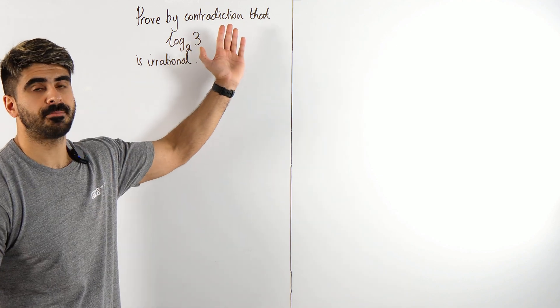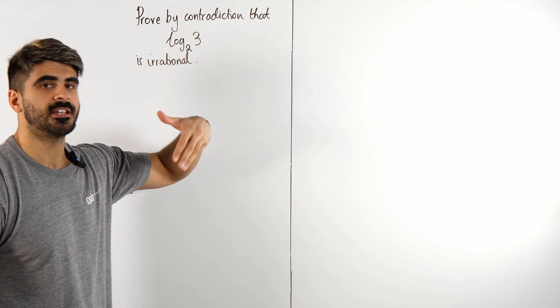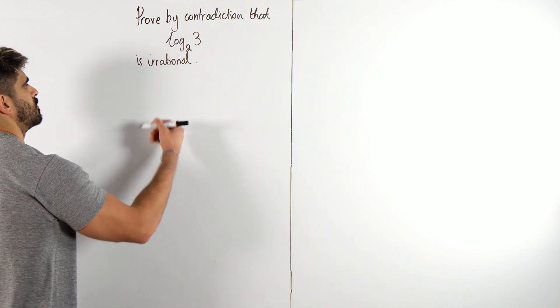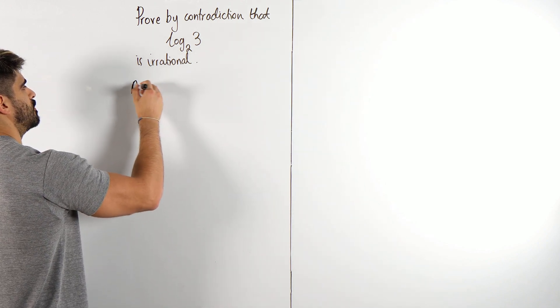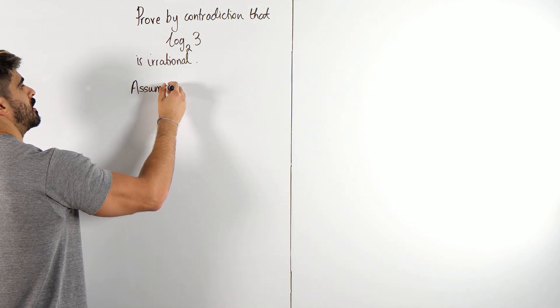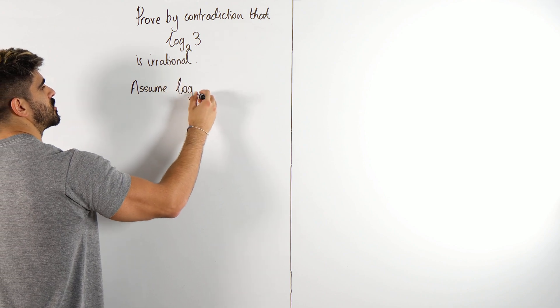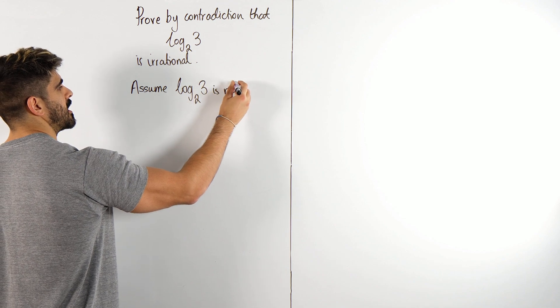If it's a proof by contradiction, we first need to negate the statement. We're going to make an assumption: let's assume log base 2 of 3 is rational.